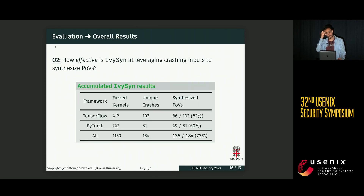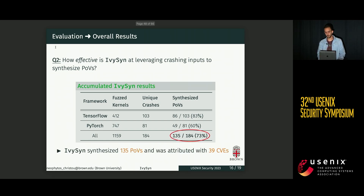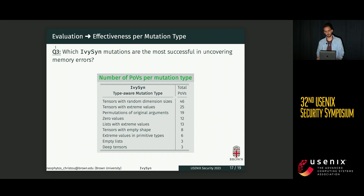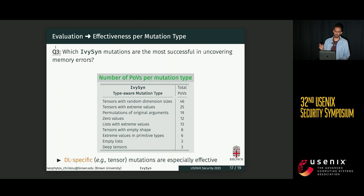For the last question, we accumulated all the POVs and crashes generated by Ivysyn across all our experiments. Ivysyn successfully generated 135 POVs, which is around 73% of the total crashes it found. It wasn't able to generate POVs for all crashes due to some limitations discussed in the paper. We submitted POVs to the framework developers, who used them to fix the underlying bugs, and we were assigned 39 unique CVEs. Regarding which mutations are most successful at uncovering memory errors, the key takeaway is that deep learning-specific mutations — for example, mutating input tensors — are especially effective at uncovering crashes in these code bases.